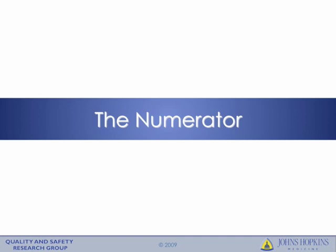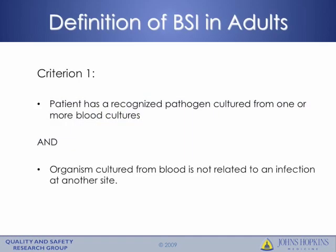First, we'll discuss the numerator, which is the number of central line associated bloodstream infections. For the purpose of this module, we will be discussing the definition of BSI in adults. It is important to note that there are also separate definitions in pediatrics and in neonates. There are two different criteria for BSI in adults. Criterion 1 is that the patient has a recognized pathogen cultured from one or more blood cultures, and the organism cultured from the blood is not related to an infection at another site.